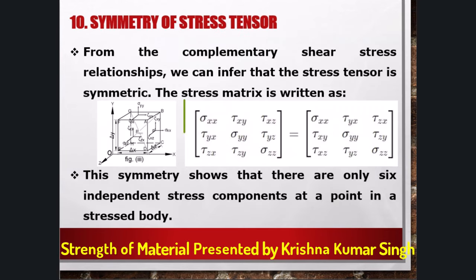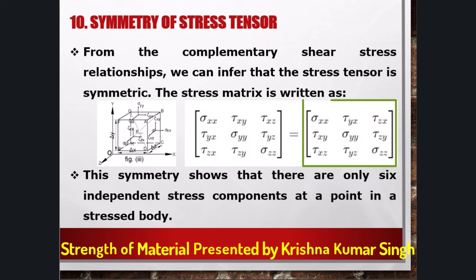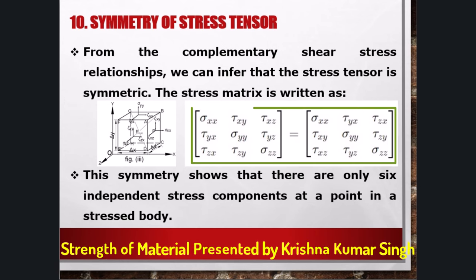Symmetry of stress tensor. We observe that the matrix representing the stress components is symmetric. The stress matrix (left-hand side) has rows: [sigma_xx, tau_xy, tau_xz], [tau_yx, sigma_yy, tau_yz], [tau_zx, tau_zy, sigma_zz]. Its transpose (right-hand side) has rows: [sigma_xx, tau_yx, tau_zx], [tau_xy, sigma_yy, tau_zy], [tau_xz, tau_yz, sigma_zz]. The symmetry is evident through the equal off-diagonal components: tau_xy = tau_yx, tau_xz = tau_zx, tau_yz = tau_zy. This symmetry is a key characteristic of the stress tensor in physical systems.